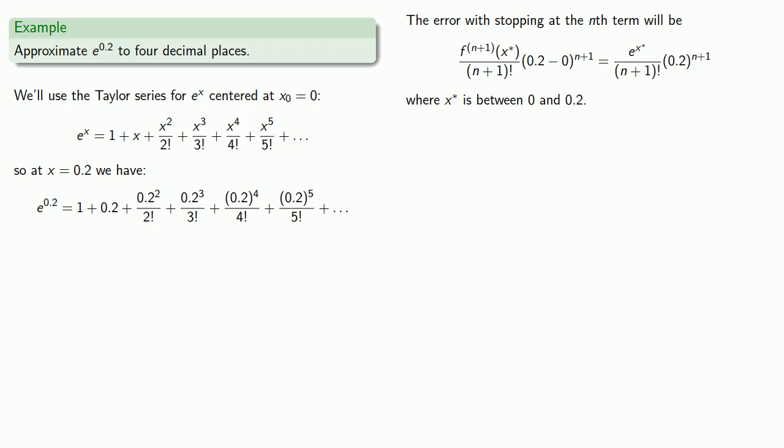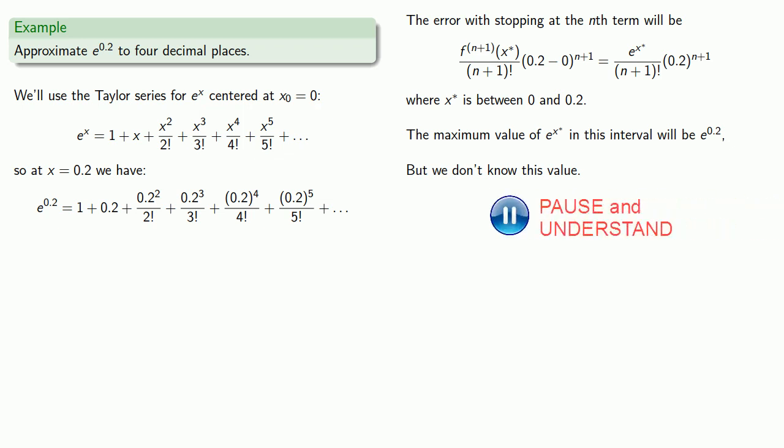Remember that we want to find the largest possible value of the error so that we know the actual error will be less. So we want to find the maximum value of e to the x star in this interval. Since e to the x is an increasing function, then the maximum value of e to the x star in this interval will be e to the power of zero point two. But we don't know this value because this is the value we're trying to approximate.